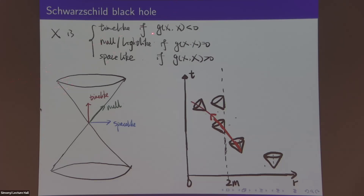This has physical meaning. In reality, people can be regarded as observers in the universe, so we use the timelike curve to model the observer, and the null curve to model the light wave. We are interested in causal curves — timelike curves and null curves — because information propagates along either timelike or null curves.